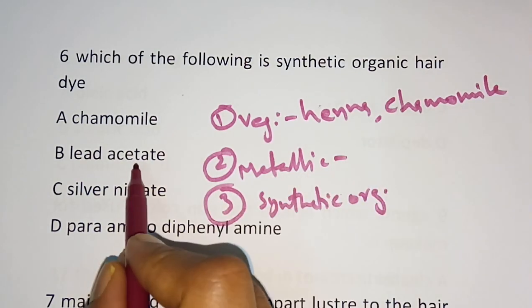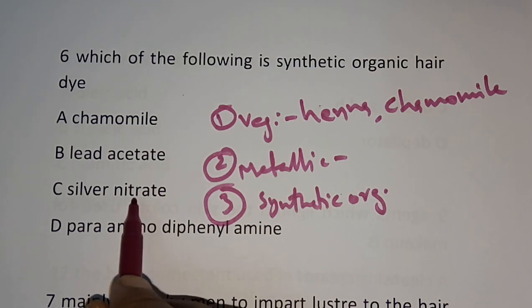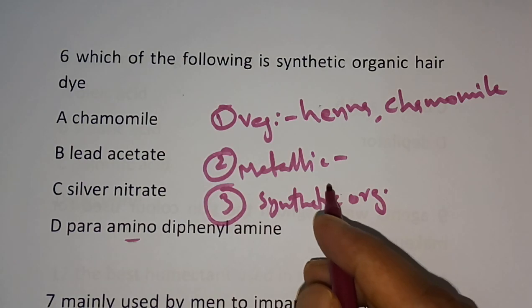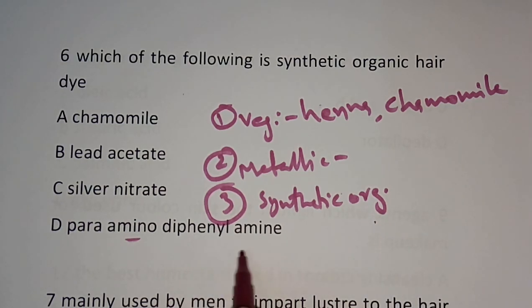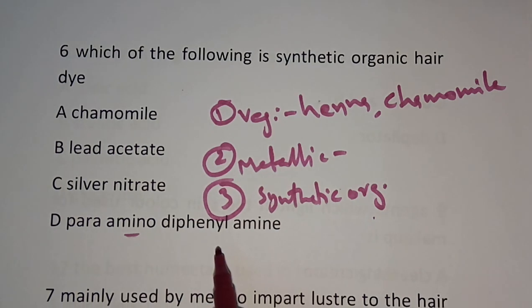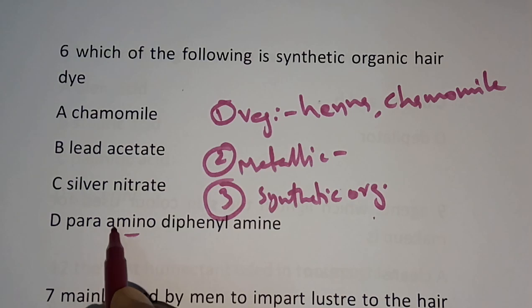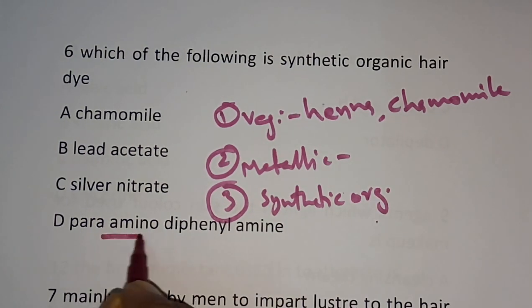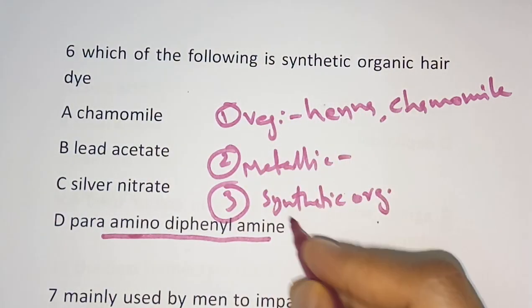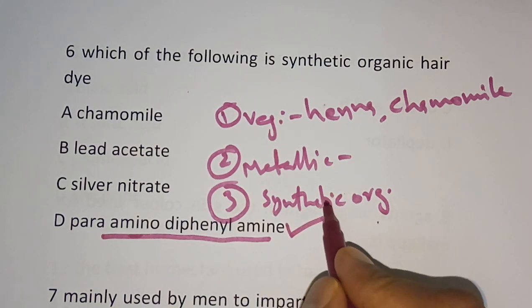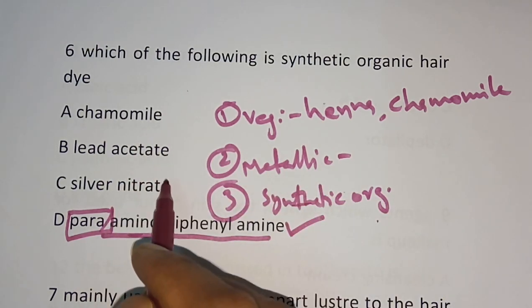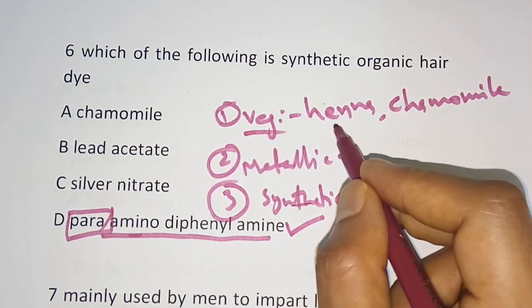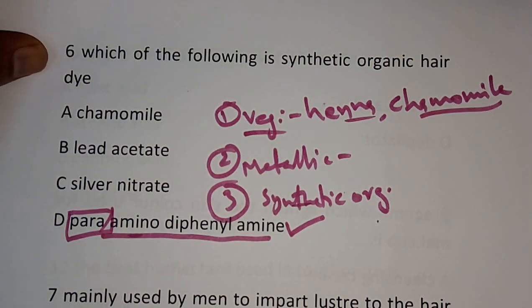Examples of metallic dyes are lead acetate, silver nitrate, copper chloride, nickel nitrate, and cobalt nitrate. Examples of synthetic organic dyes are para-toluidine diamine, para-amino diphenyl amine, and phenylene diamine. So the correct answer is para-amino diphenyl amine. Synthetic organic dyes start with the word 'para,' while metallic dyes include compounds like silver nitrate, and vegetable dyes include henna and chamomile.